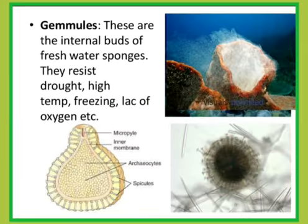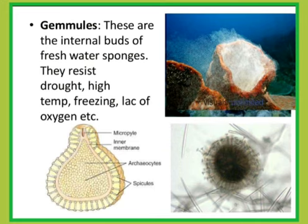The next one is the endogenous bud called a gemmule. This is an internal bud present in some freshwater sponges. They resist drought, high temperature, freezing point, and lack of oxygen.